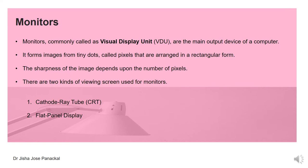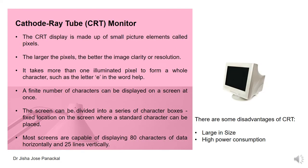The CRT display is made up of small picture elements called pixels. The larger the number of pixels, the better the image clarity or resolution. More pixels produce higher resolution images. It takes more than one illuminated pixel to form a whole character, such as the letter E in the word 'help.' A finite number of characters can be displayed on a screen at once. The screen can be divided into a series of character boxes fixed on the screen where a standard character can be placed.